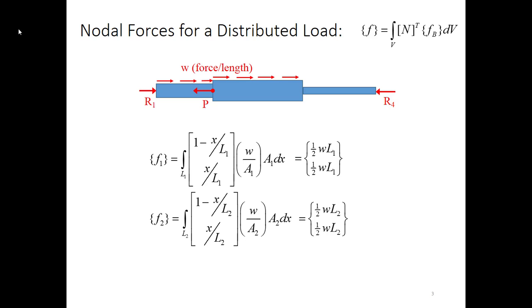The second element looks the same, only difference being the length might be different. This is for uniform traction. If the traction varied with position, W would depend on position and I'd end up with different forces at the two ends. Note the right element, element 3, doesn't have any force from the distributed load. This is only for the distributed load. I've still got three point loads R1, P, and R4 that I need to add during assembly.